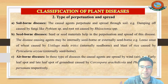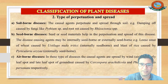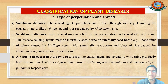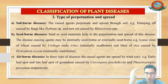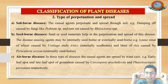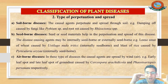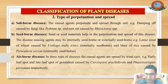The third type is air-borne disease, where the pathogen is spread by the wind or air. For example, we have early leaf spot and late leaf spot of groundnut, where the causal agents — Cercospora and Phaeoisariopsis — are spread only through the wind or air. Such types of diseases, where the causal agent is spread by wind or air, are termed air-borne diseases.